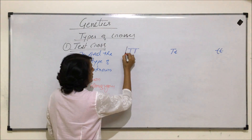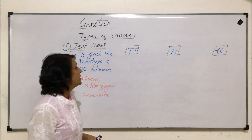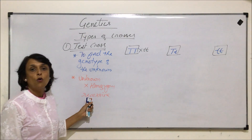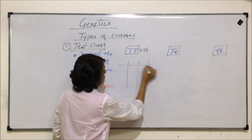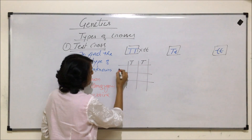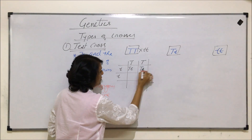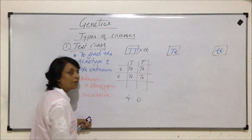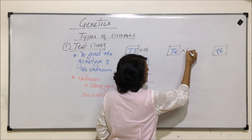Suppose these are our unknowns — but for understanding, we are writing their genotypes. We will cross them with one of the parents which is homozygous recessive. Now if we plot a Punnett square, we see that with capital T on one side, all four offspring are going to be heterozygous. So our ratio here is going to be four is to zero.